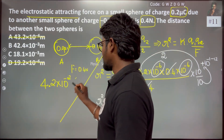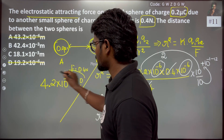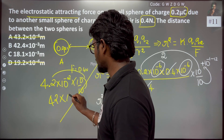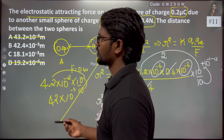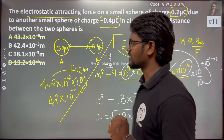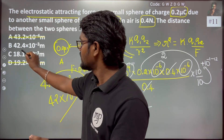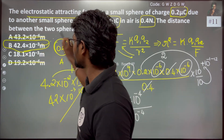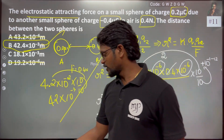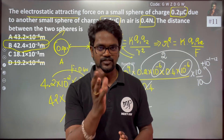This is very easy. 4.2 × 10^-2 can also be written as 42 × 10^-3 meters. So 42 × 10^-3 meter, which is 42 millimeters, is the right answer.